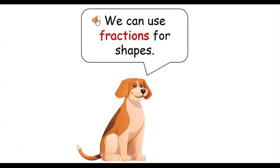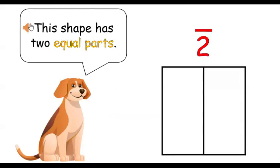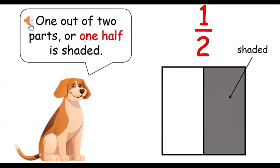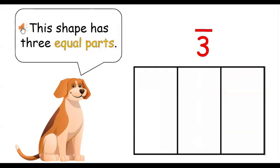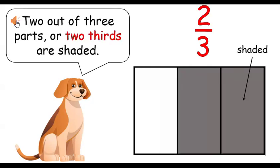We can make fractions when we divide a whole into equal parts. We can use fractions for shapes. One out of two parts, or one half, is shaded. Two out of three parts, or two thirds, are shaded.